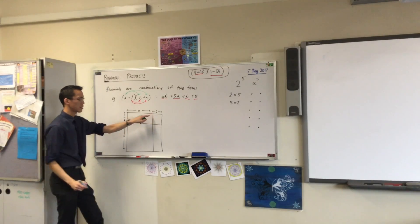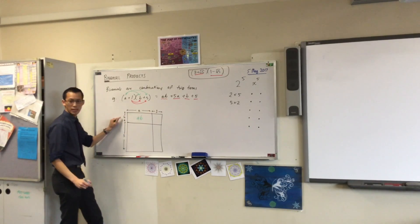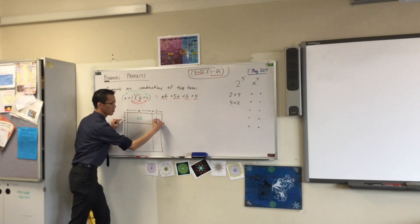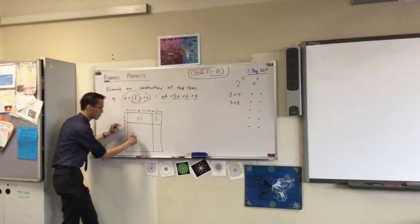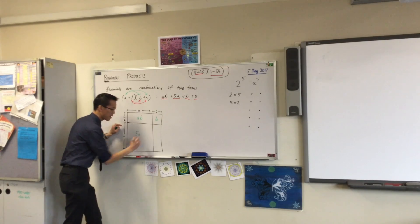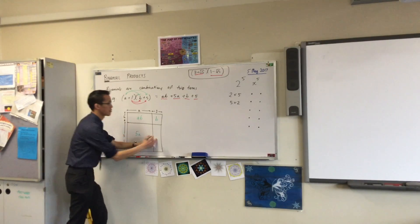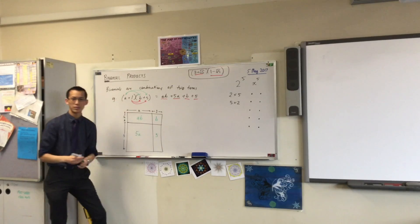What about this one over here? It's 1 times B. So it's just B. Do you agree? How about this one down here? 5A. And then this one here is 5 times 1, which is 5.